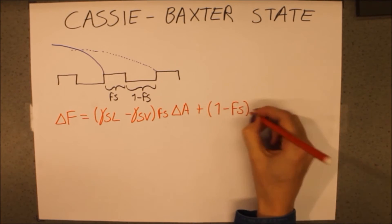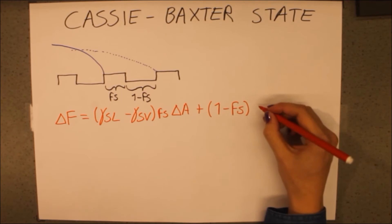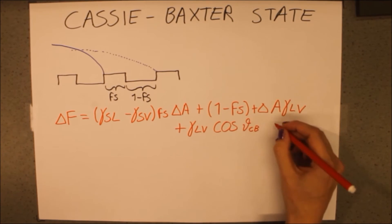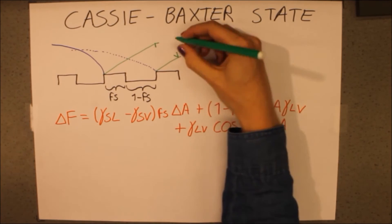The rest of delta A, 1 minus Fs, adds a term of liquid vapor surface tension. The third term is similar to the Wenzel case, only we now call the equilibrium angle the Cassie-Baxter angle.